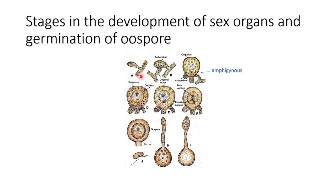When hyphae of two opposite strains come into close contact, formation of the antheridia takes place first. You can see the club-shaped structure developing laterally — this is the antheridium developing laterally. After development of the antheridium, the oogonium arises from the opposite hyphae and develops below the antheridium. The oogonium then penetrates through the antheridium and emerges out as a globular structure. The antheridium then forms a collar-like or funnel-shaped structure attached below the oogonium.